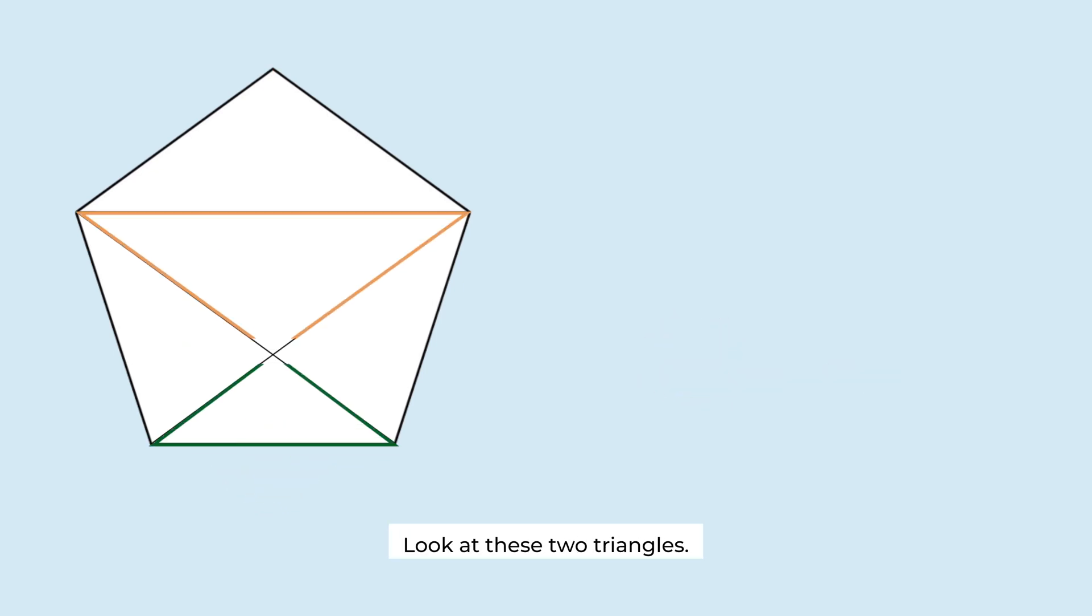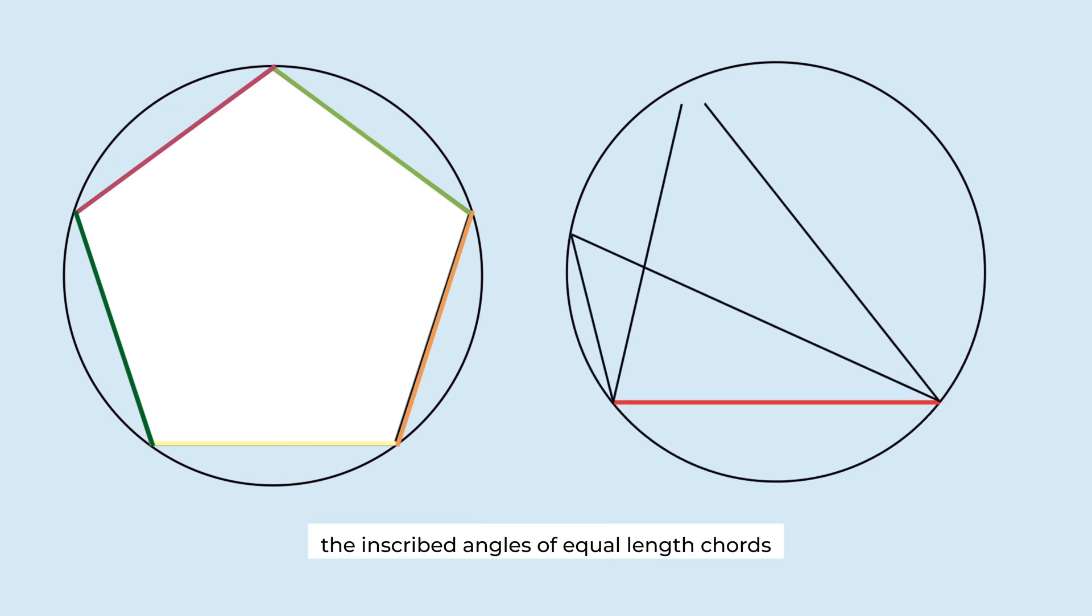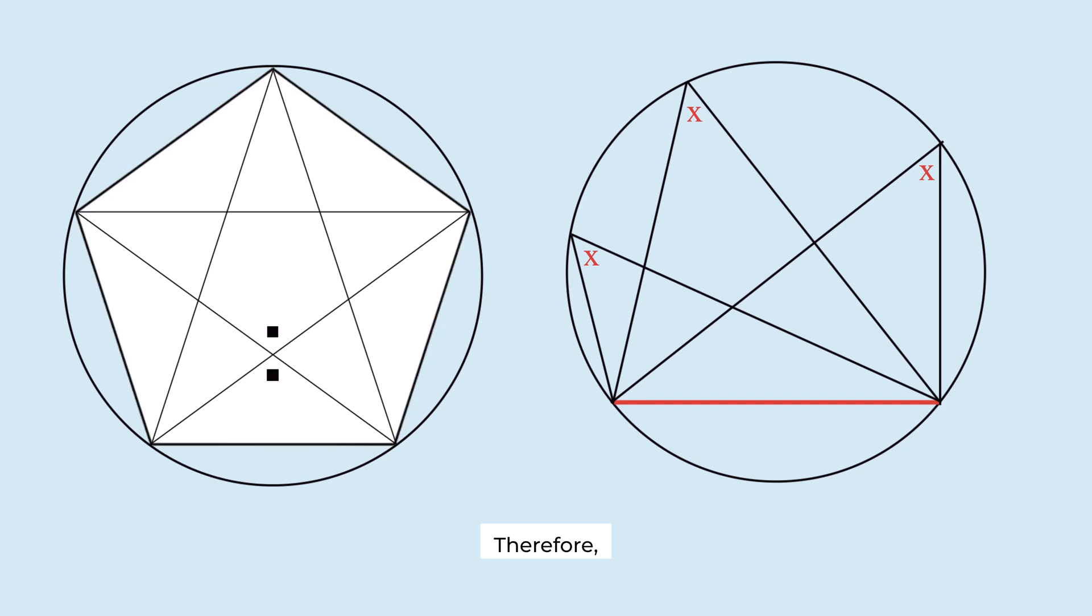Look at these two triangles. Since these two angles are vertical angles, they are equal. Moreover, the regular pentagon is inscribed in a circle. So the sides are all chords of the circle. In a circle, the inscribed angles of equal length chords are the same. Therefore, all these angles are congruent.